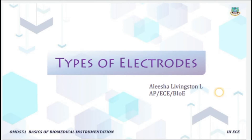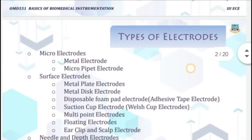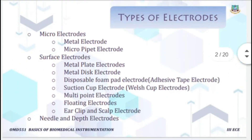What are electrodes? Electrodes are used to pick up the electrical signals of the body. The electrode pair plays the role of a transducer, which converts ionic current to electrical current. Now we are going to look at the types of electrodes.